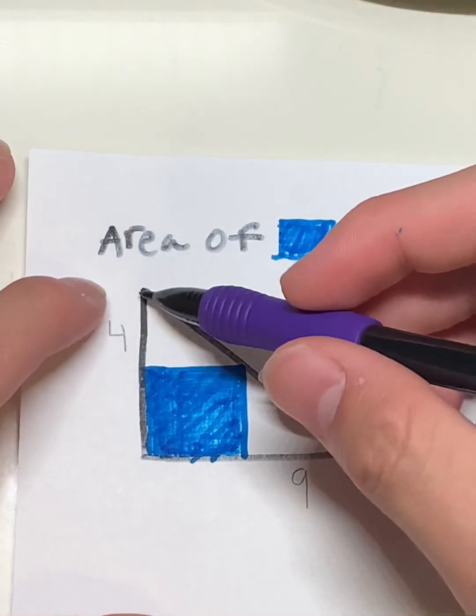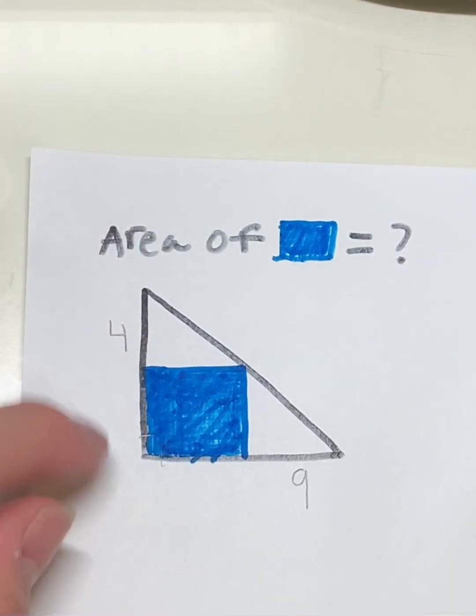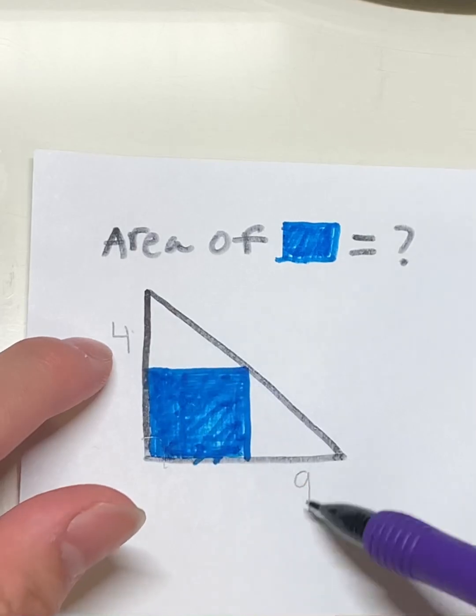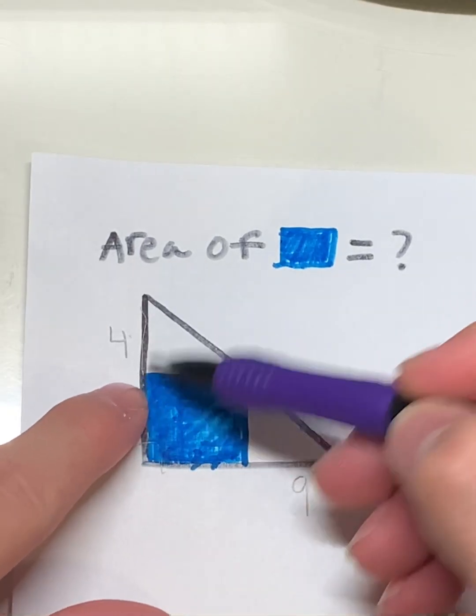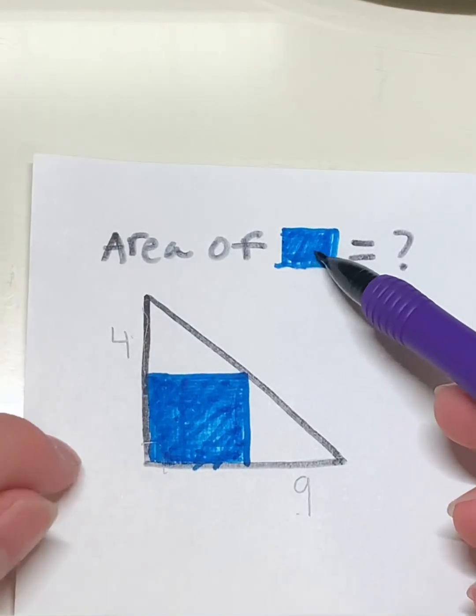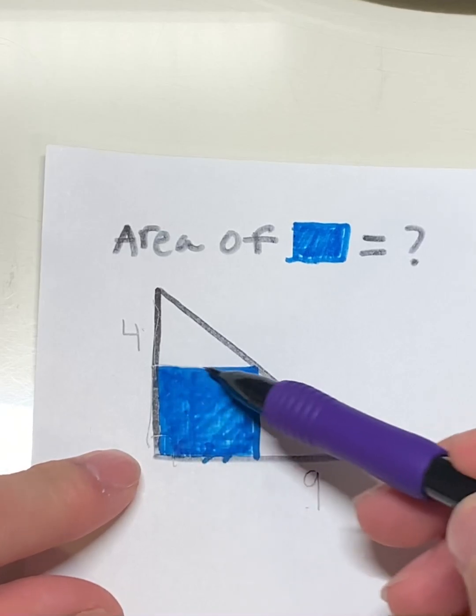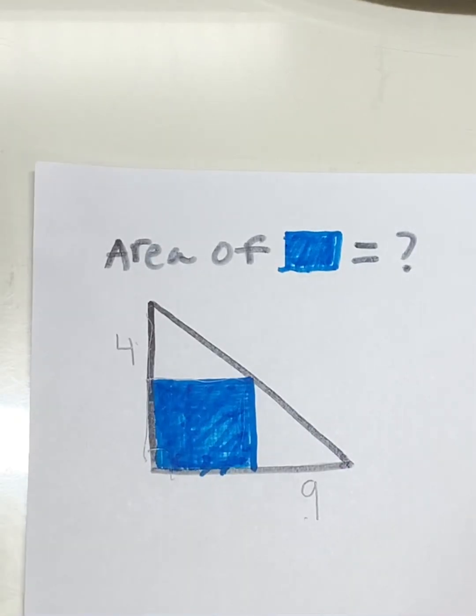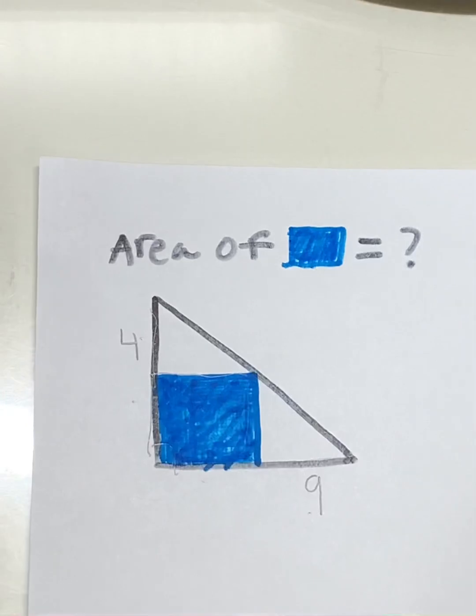So right now we're given a triangle, a right triangle specifically, with measures of 4 and 9 on this side and this side. So we need to find the area of the square, but we're not given any of these sides, which is necessary to find the area of the square. Side times side, that gives you area.